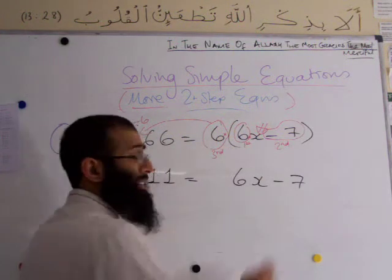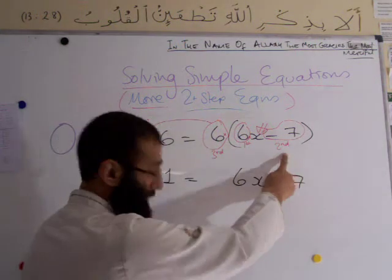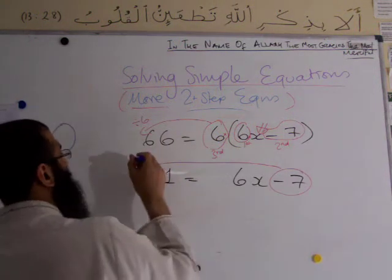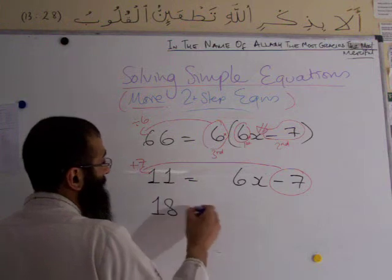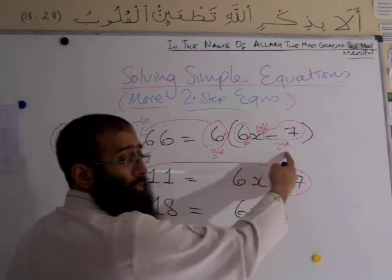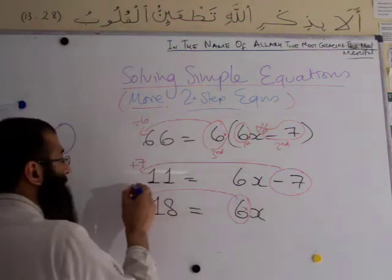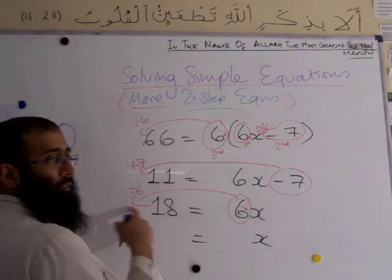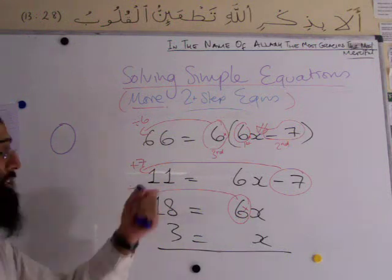We're left with 6x minus 7 equals 11. We've done the third action — now the second action: opposite of minus 7 is add 7. 11 plus 7 equals 18. Now for the first action: opposite of times by 6 is divide by 6. 18 divided by 6 equals 3. So x equals 3. Well done, Adil — that's a three-step question!